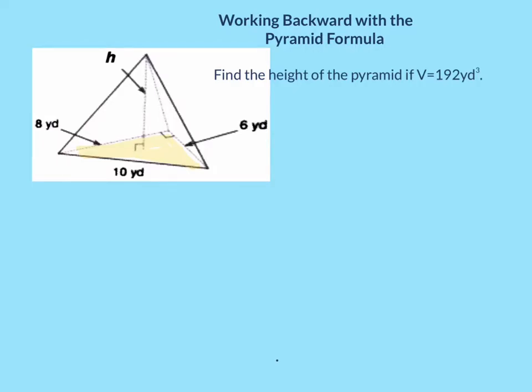You can use the formula for a pyramid, volume equals one-third area of the base times the height, to work backward to find a missing dimension. In this case, we know that the volume is 192 cubic yards and that we're looking for the height, which goes here and meets the base at a right angle.